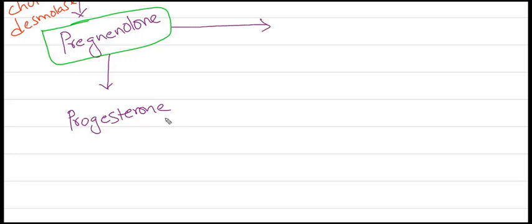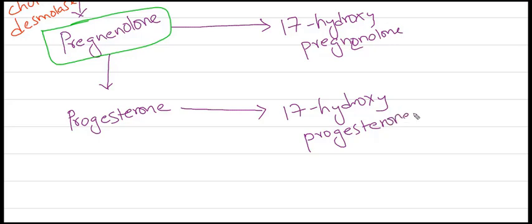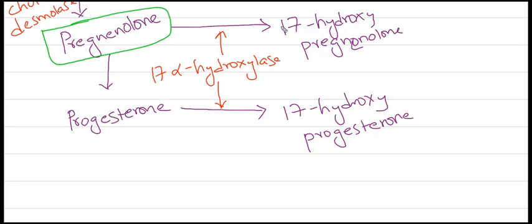From pregnenolone, we get progesterone through 3-beta hydroxysteroid dehydrogenase. From pregnenolone, we also get 17-hydroxypregnenolone, and from progesterone we get 17-hydroxyprogesterone. Both of these latter reactions are catalyzed by an enzyme called 17-alpha hydroxylase, which is one of the important enzymes in this pathway.